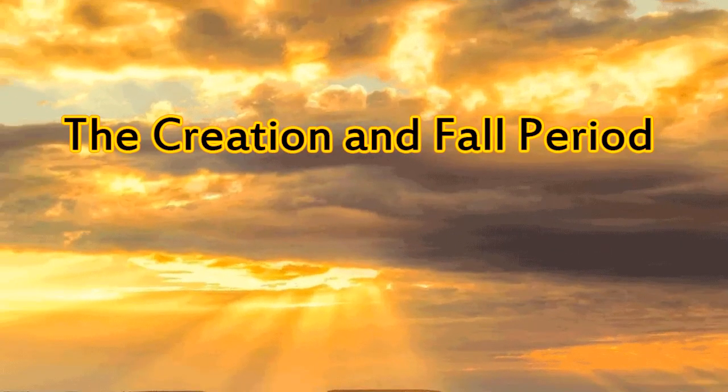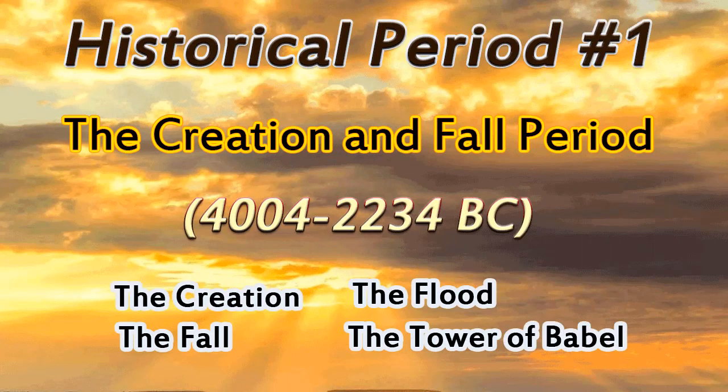Historical period number one: the creation and fall period, 4004 BC to 2234 BC. The main events of creation, Genesis chapters 1 through 11, were number one, the creation of the heavens and the earth and all living things, including mankind. God created everything in six days and rested on the seventh day to establish the Sabbath day.